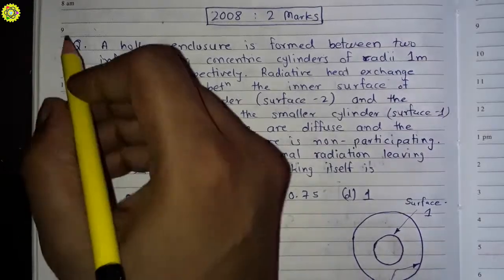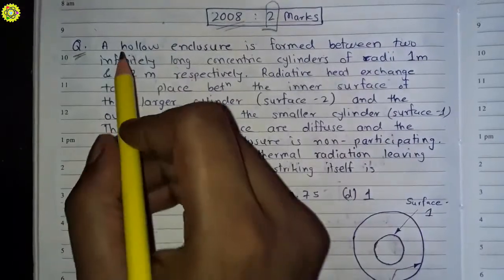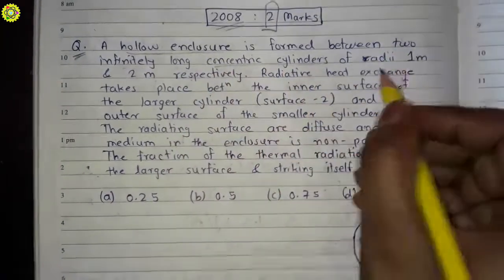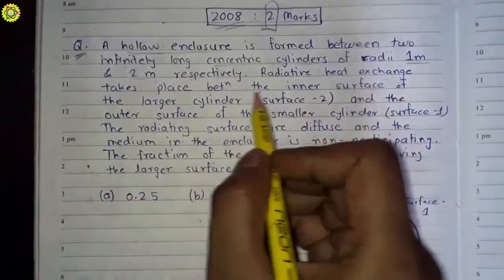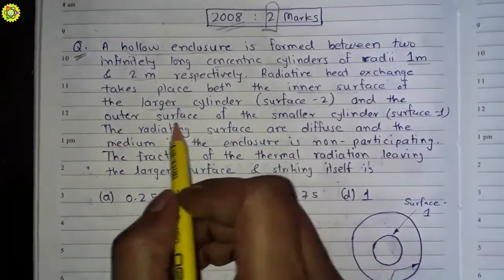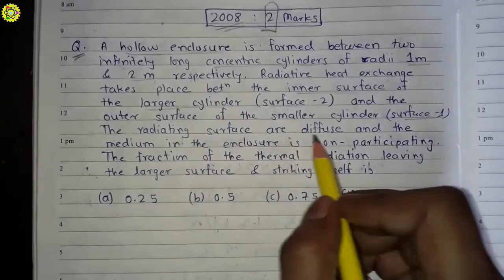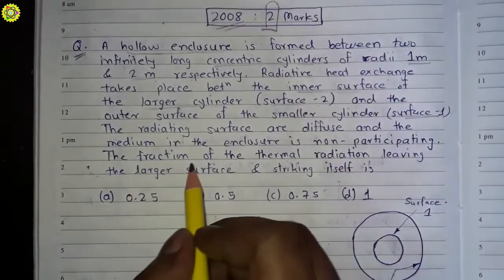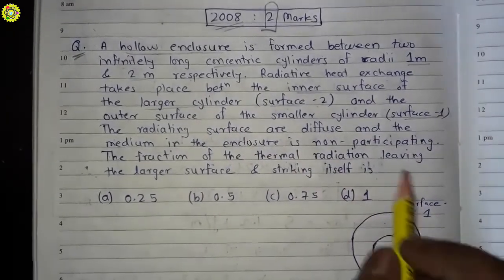Welcome friends. This question is from the 2008 question paper and it was for two marks. A hollow enclosure is formed between two infinitely long concentric cylinders of radii 1 meter and 2 meter respectively. Radiative heat exchange takes place between the inner surface of the larger cylinder (surface 2) and the outer surface of the smaller cylinder (surface 1). The radiating surfaces are diffuse and the medium in the enclosure is non-participating. We have to find the fraction of thermal radiation leaving the larger surface and striking itself.